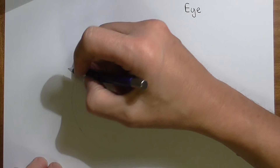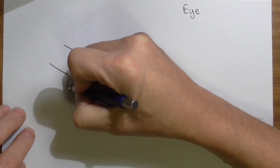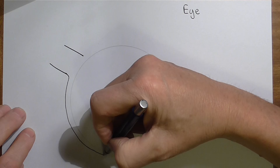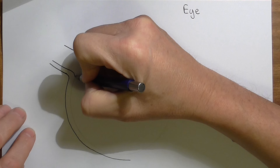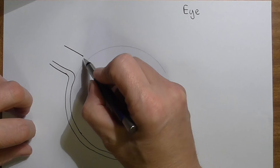The optic nerve is going to be coming in from the back here, approaching the back of the eye. There's going to be a tough fibrous layer around the outside of the whole eye, and this continues to line the optic nerve.